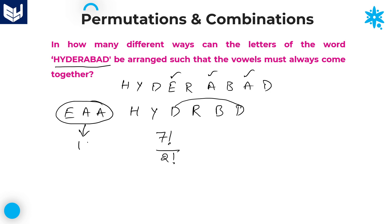No other letters are repeated, so no further division is needed for the consonants. Within the single entity, we have three vowels: E, A, A. Those three vowels can be arranged in 3 factorial ways. But the vowel A is repeated twice, so divide by 2 factorial.